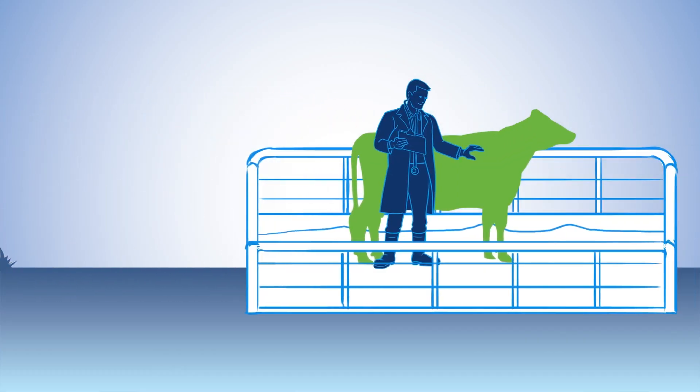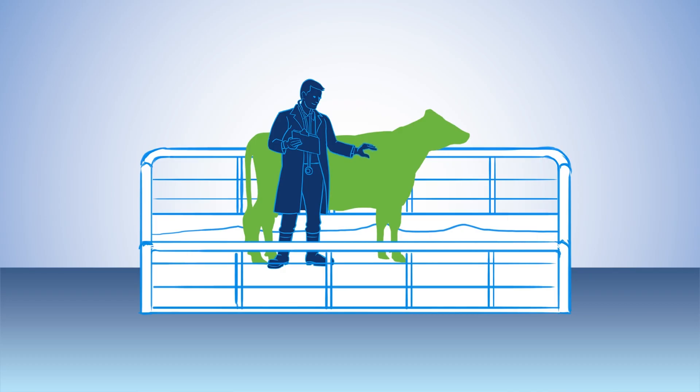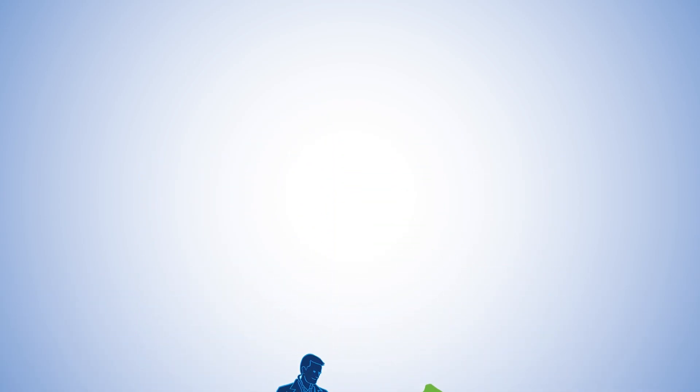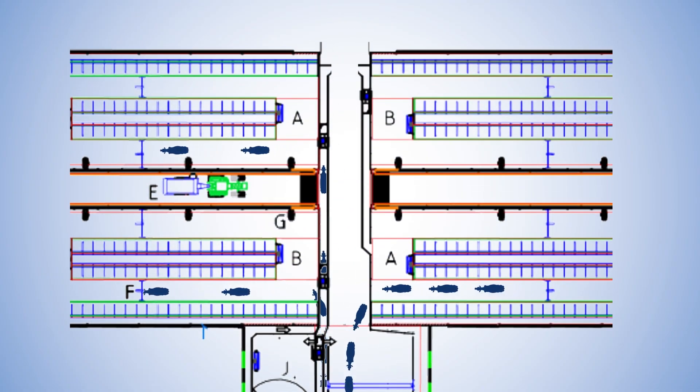It means they can be separated for treatment, observation or insemination. It means you can manage your system whether you operate a feed first or milk first, free traffic, batch milking or guided milking system.